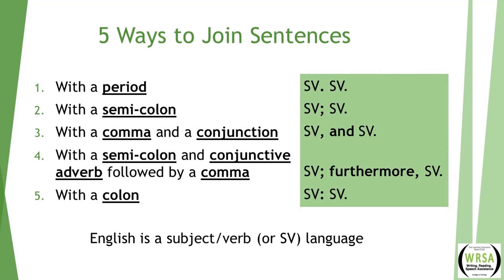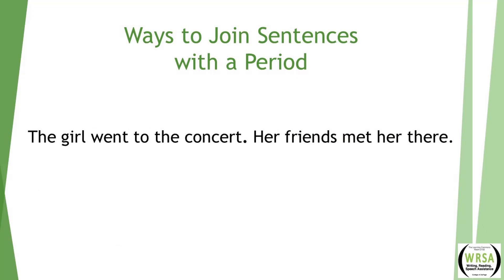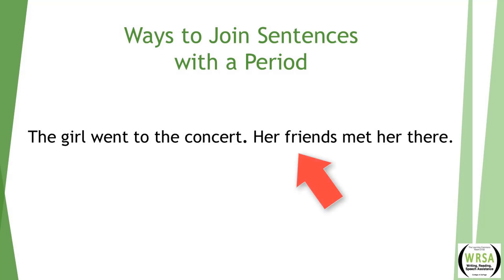Here are the five main ways to join sentences together. English is a subject-verb language. We may vary how complicated the subjects and verbs are and add many different kinds of clauses, but the basic structure remains the same. The first way is joining sentences with a period. The girl went to the concert. Her friends met her there. Each sentence has a subject and a verb — someone doing something. In the first sentence, the girl went somewhere. In the second, her friends met her there. Subject-verb, subject-verb, joined by a period.